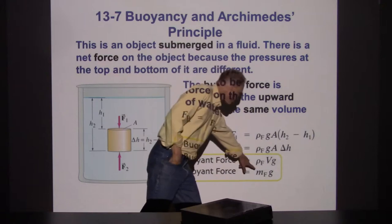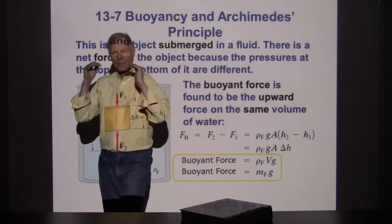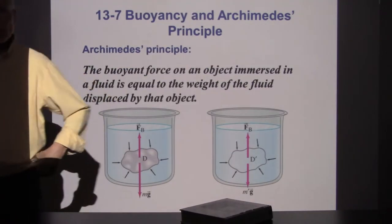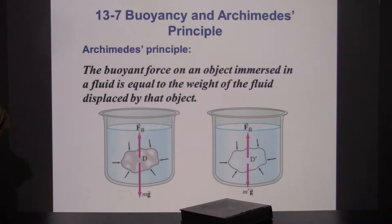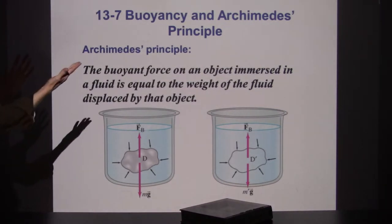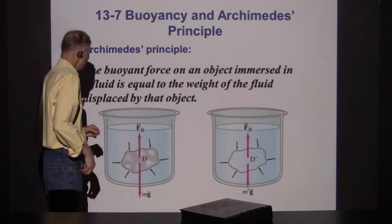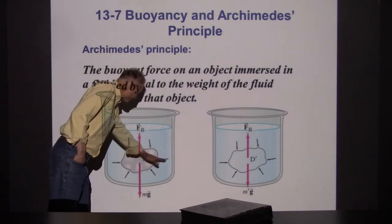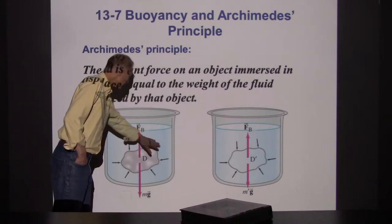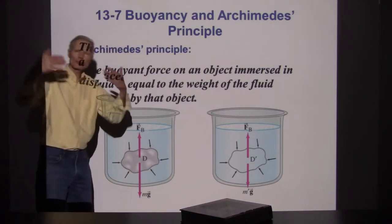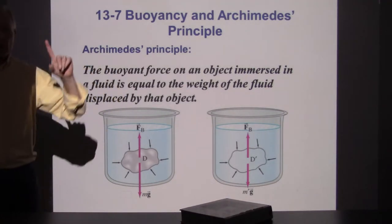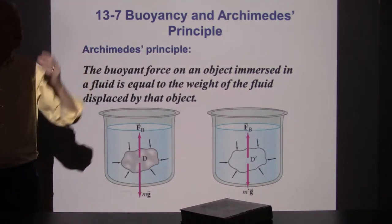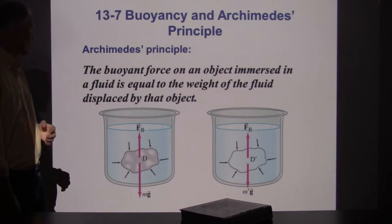The buoyant force can also be written as the mass of the fluid displaced times g. It's a result of the pressure below the object being higher than the pressure above — the pressure along the sides tends to cancel out. So it's how much upward force we have minus how much downward force due to the fluid, and that gives us a net upward effect.